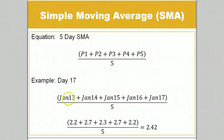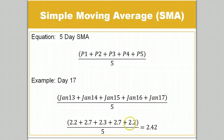January 13th: 2.2, January 14th: 2.7, January 15th: 2.3, January 16th: 2.7, and January 17th: 2.2 — to get 12.1, then divide that by 5 to get our SMA of 2.42.